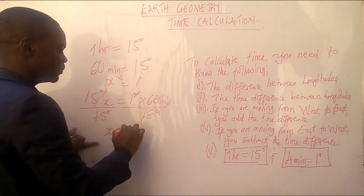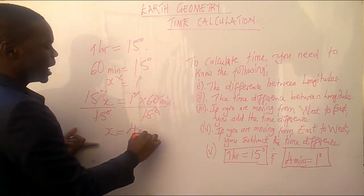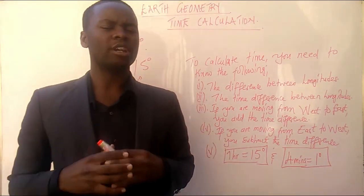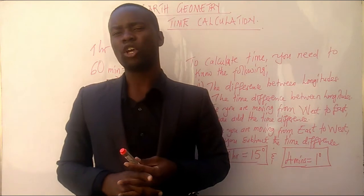And then, 15 to 60, it's 4 minutes. As a result, we have got 4 minutes is equal to 1 degree. Very simple concept there on how you must calculate time.